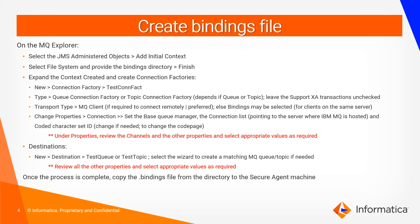Then the corresponding JMS destination will need to be created. Once all the binding file configurations are done, the binding file — wherever the MQ Explorer is hosted, on the machine where it is hosted — the binding file will be generated. The binding file can be copied to the configuration machine for use on the CAI.